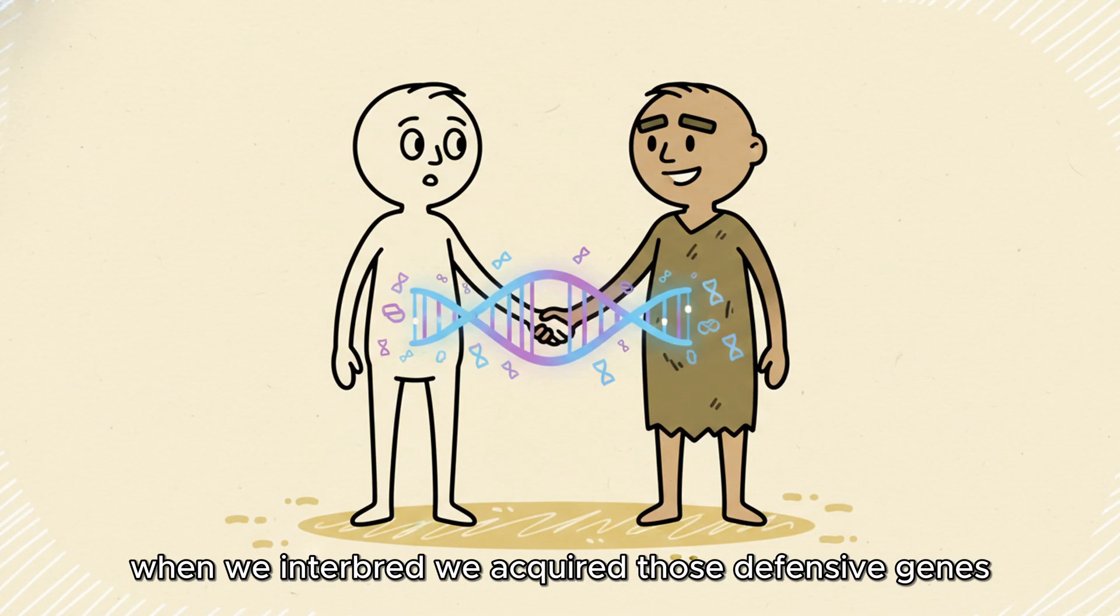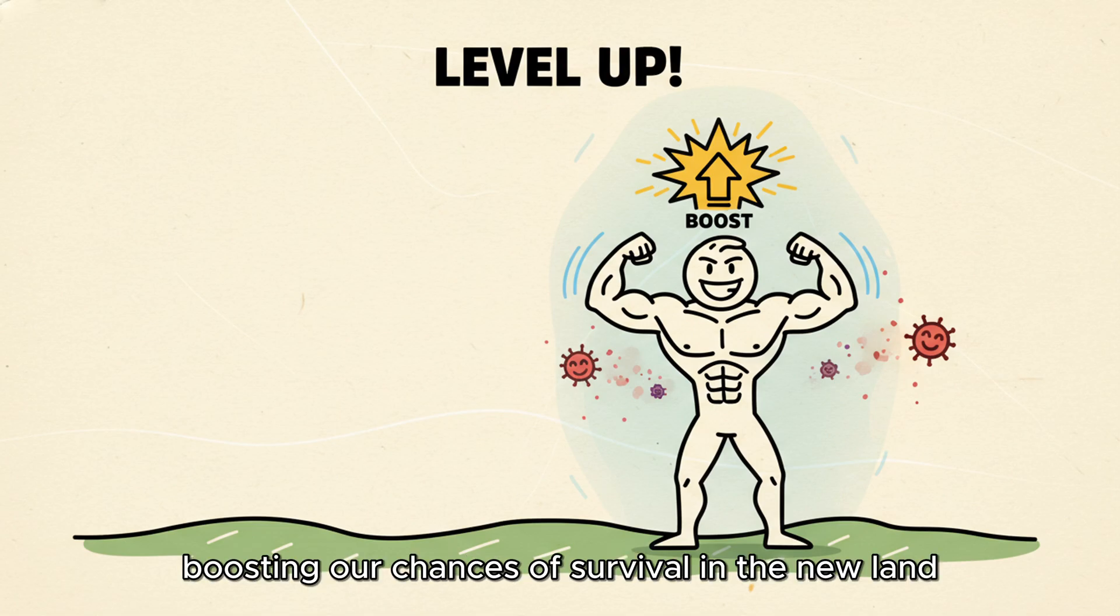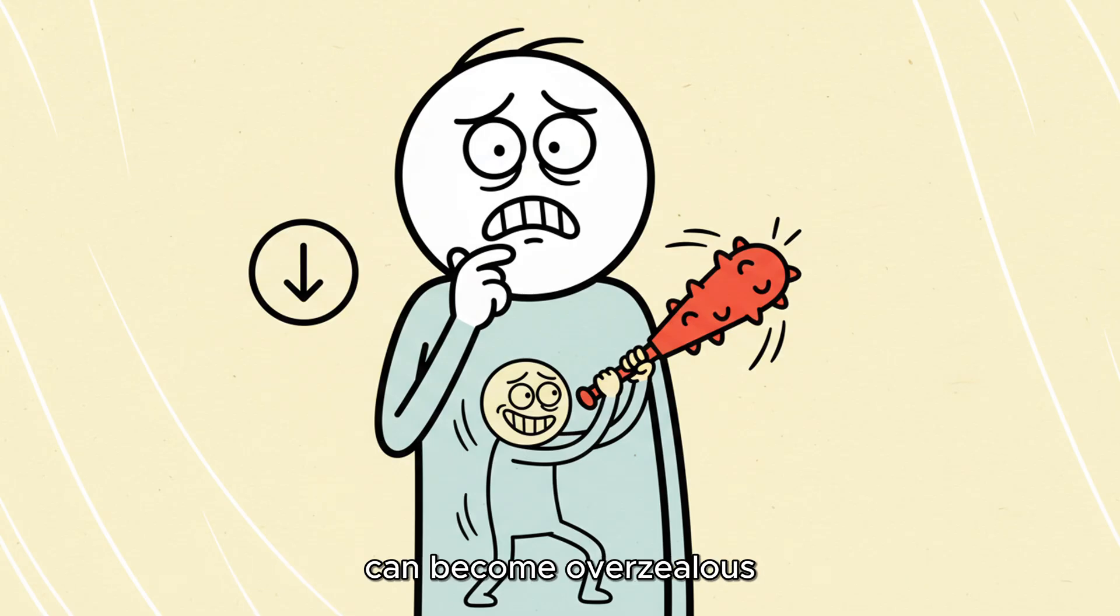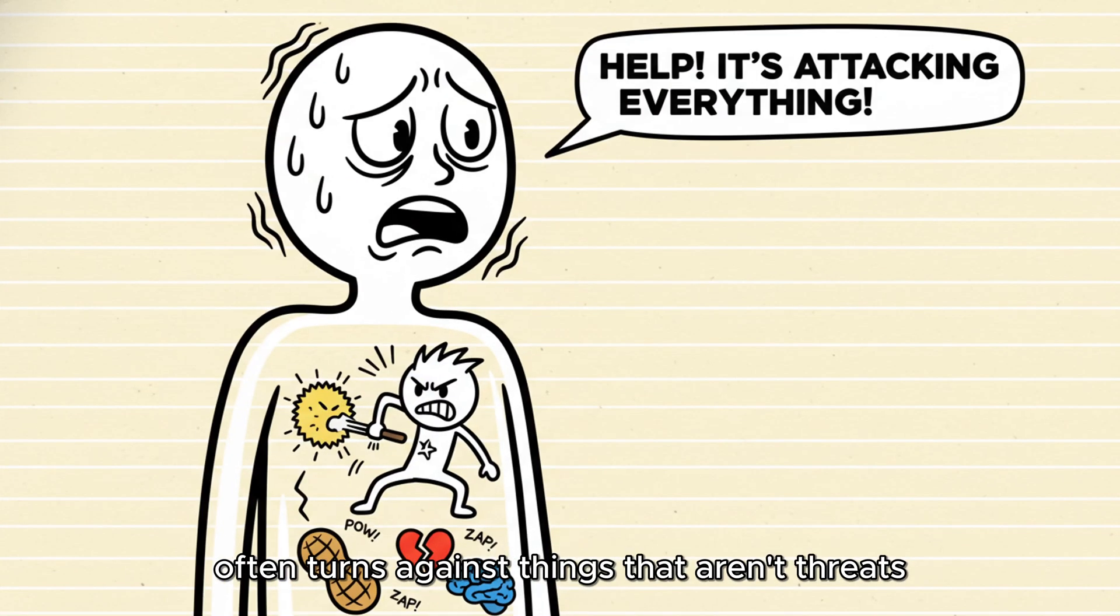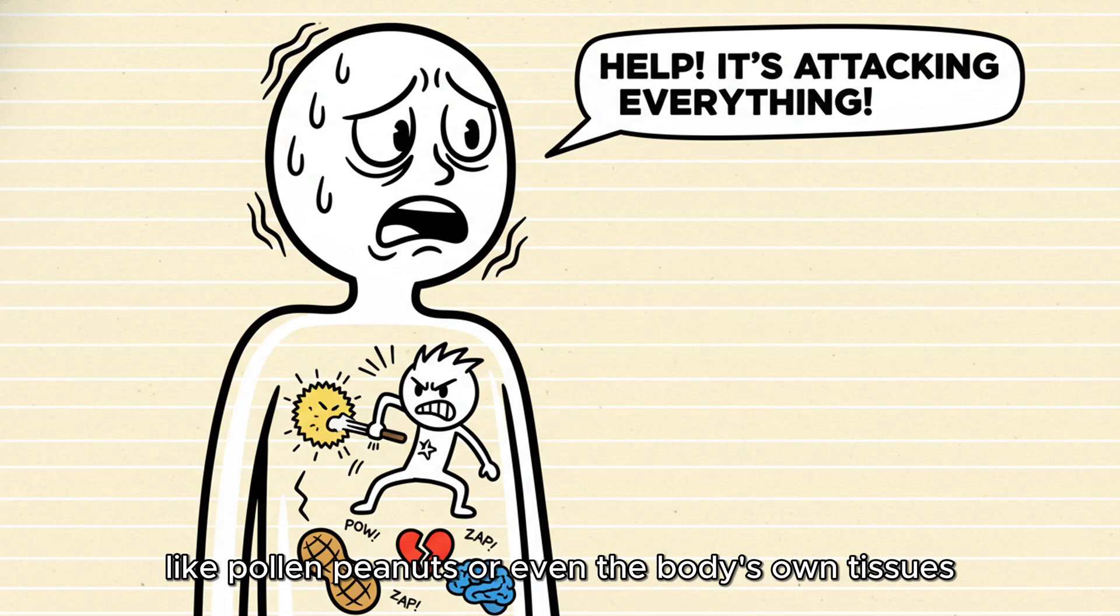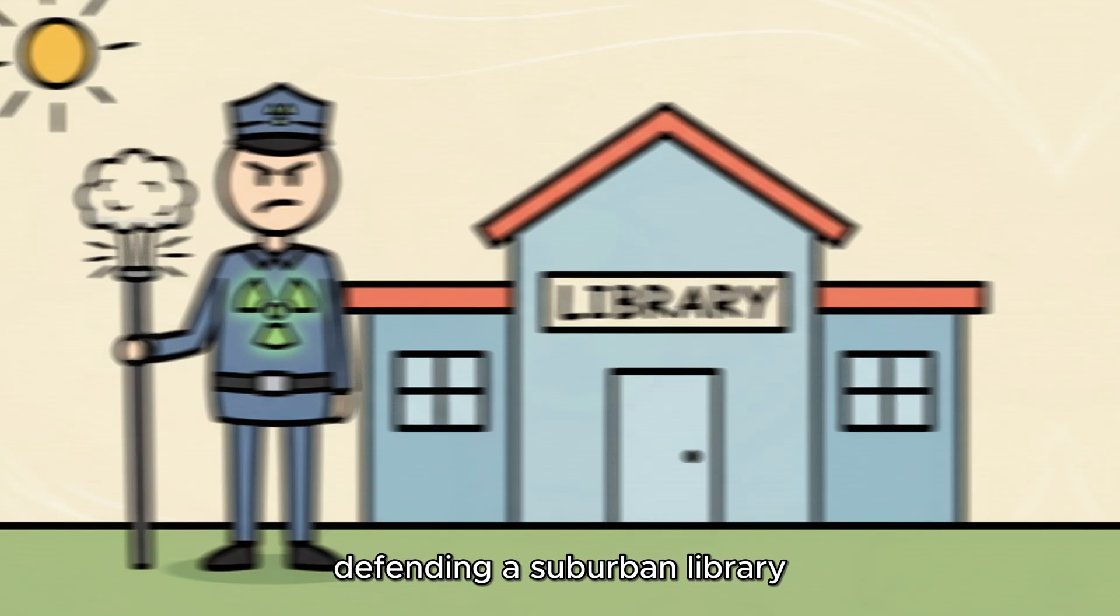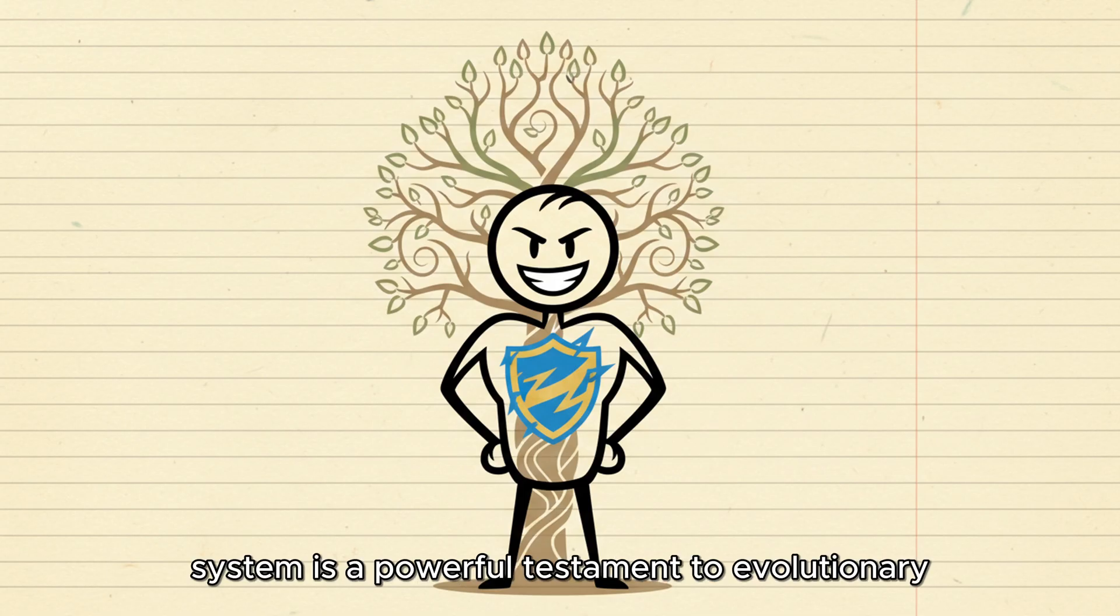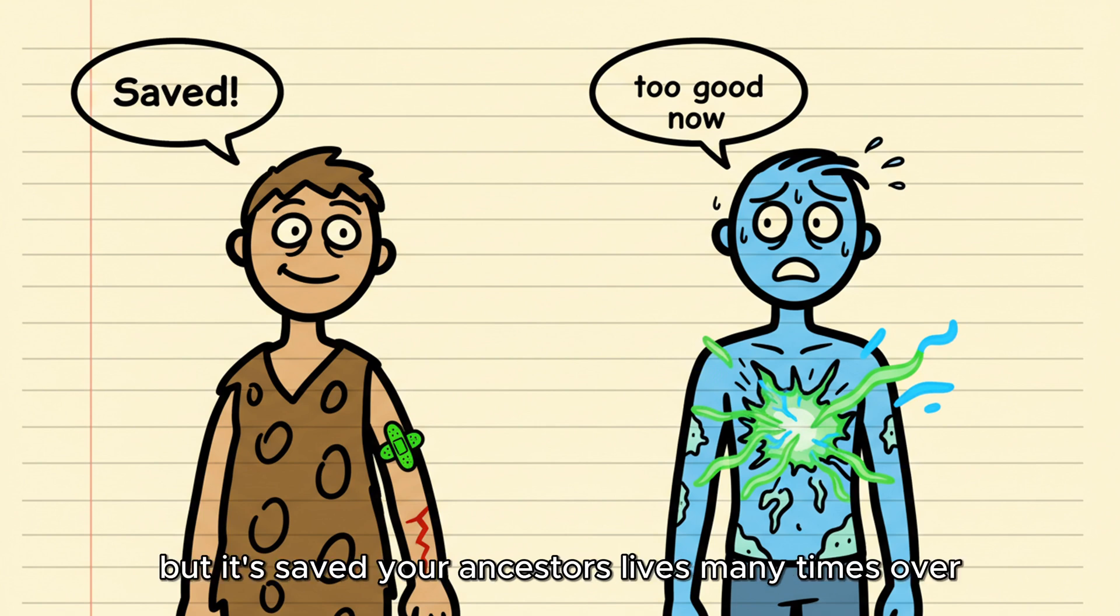When we interbred, we acquired those defensive genes. It was a genetic download of a local defense system, immediately boosting our chances of survival in the new land. The downside? An immune system that is too sensitive can become overzealous. In our relatively clean, industrialized world, this supercharged defense system often turns against things that aren't threats, like pollen, peanuts, or even the body's own tissues. It's like having a nuclear-armed security guard defending a suburban library. It's powerful, but prone to friendly fire. If you deal with chronic allergies or an autoimmune condition, remember this. Your immune system is a powerful testament to evolutionary adaptation. It's too good at its job now, but it's saved your ancestors' lives many times over.